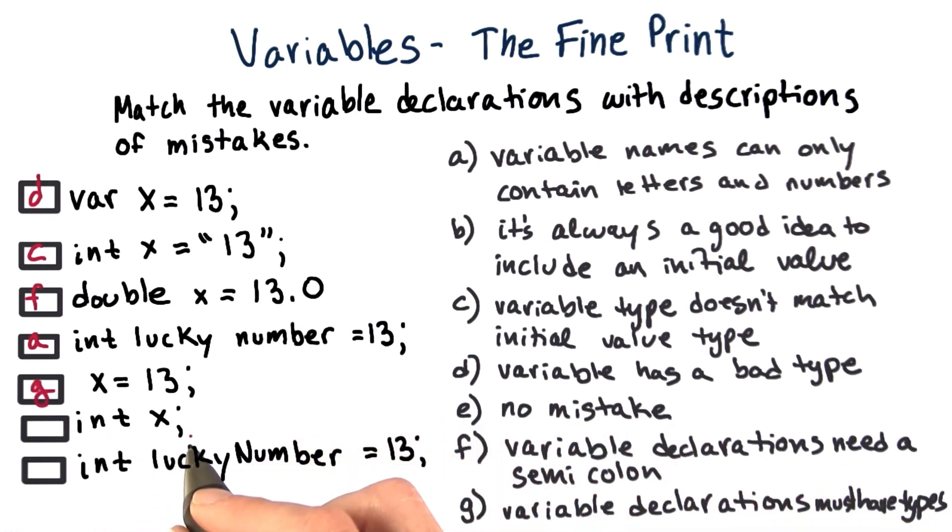Int x. We haven't given any initial value. It's always a good idea to include an initial value. Int lucky number equals 13. This one looks good to me, so there's no mistake.